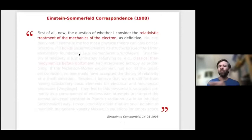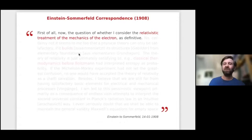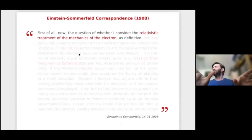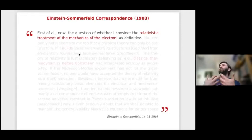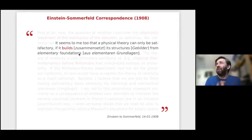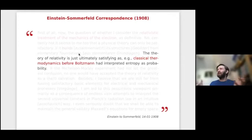Einstein explained to Sommerfeld: 'Is the relativistic mechanics of the electron definitive? No, certainly not.' We need a fundamental theory that builds its structures from elementary foundations — a model of the electron and of radiation — but I don't have it. So relativity theory is at this moment like thermodynamics before Boltzmann: without the molecular theory of gases, the Michelson–Morley experiment showed us something is going on in the relationship between thermodynamics and mechanics, but we still lack a theory of electrical and mechanical processes.